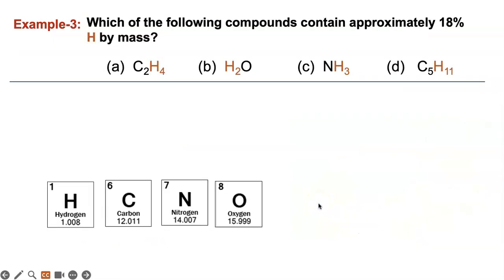One last problem: which of the following compounds contains approximately 18% hydrogen by mass? You have four compounds, each containing hydrogen. So how would you do this? You have to first calculate the molar masses of each one and the gram mass of each of the hydrogens in each of them and figure out the percent composition.